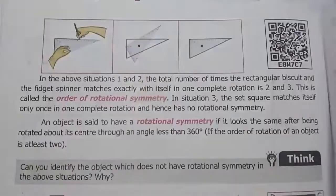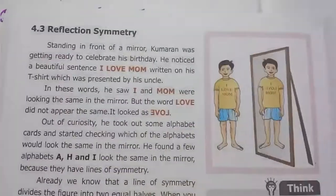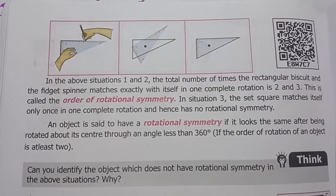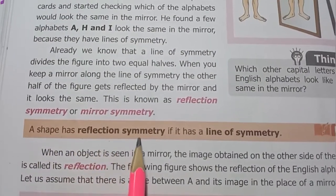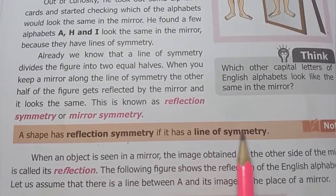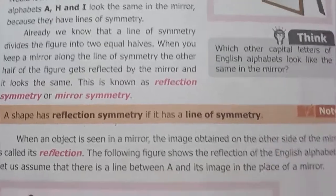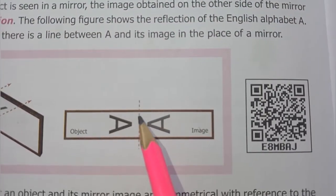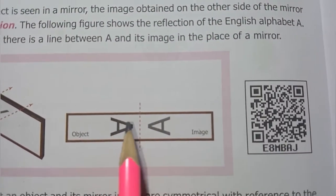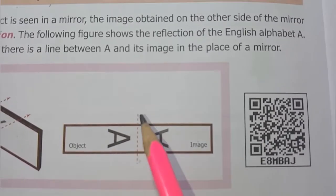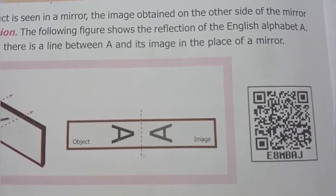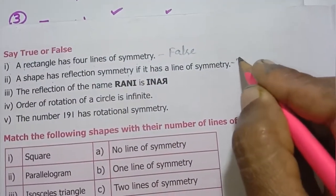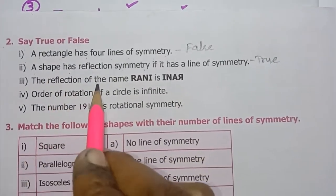Second one: a shape has reflection symmetry if it has a line of symmetry. If there is a line of symmetry, there is a reflection — so yes, a shape has reflection symmetry if it has a line of symmetry. The answer is true.